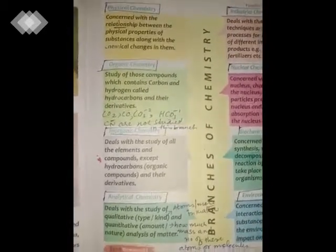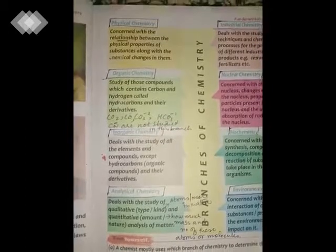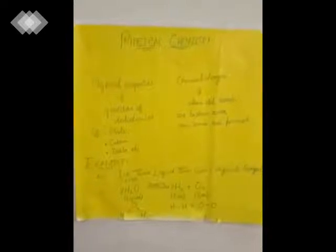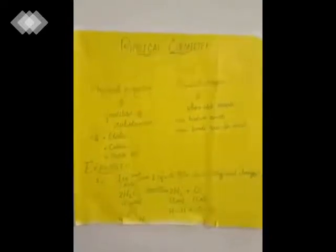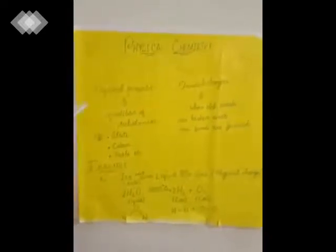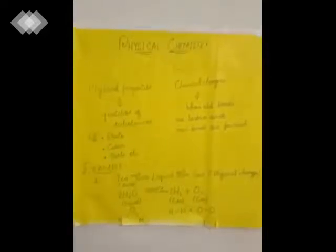Now I am discussing first about the physical chemistry. What is physical chemistry? The definition shows that it is concerned with the relationship between the physical properties of substances along with the chemical changes in them. The definition shows two main things: physical properties of a substance, and chemical changes.